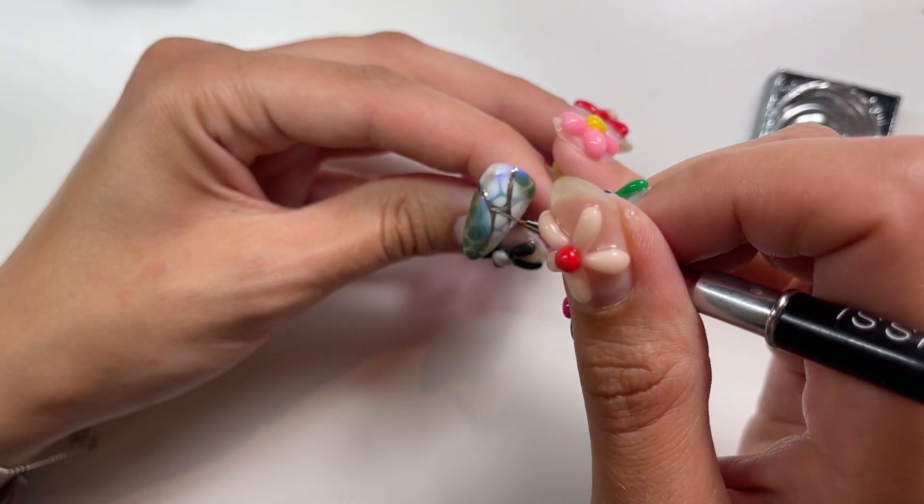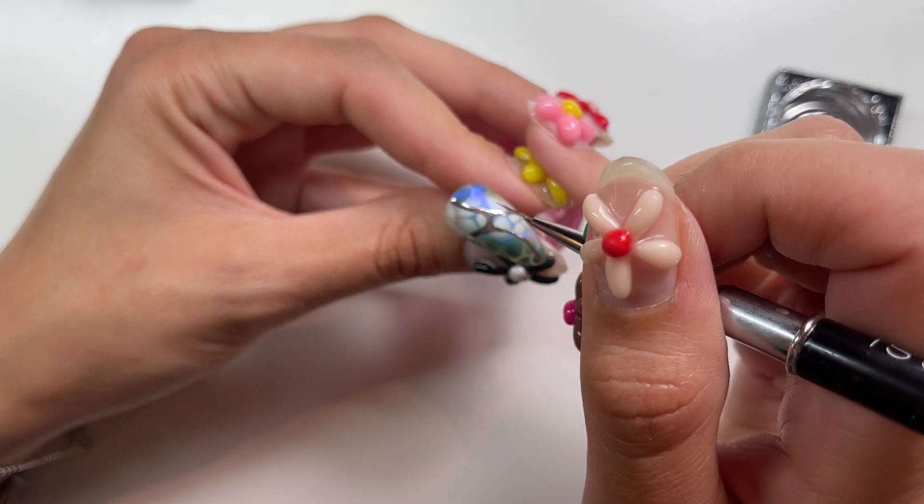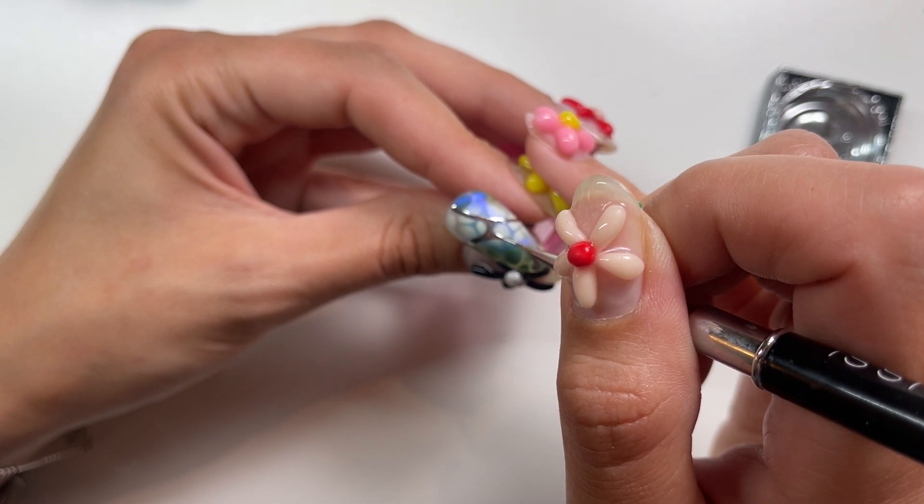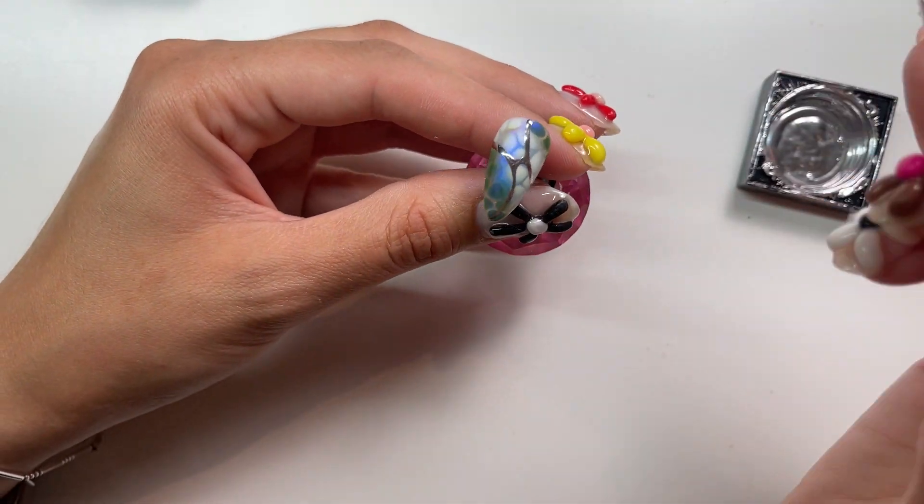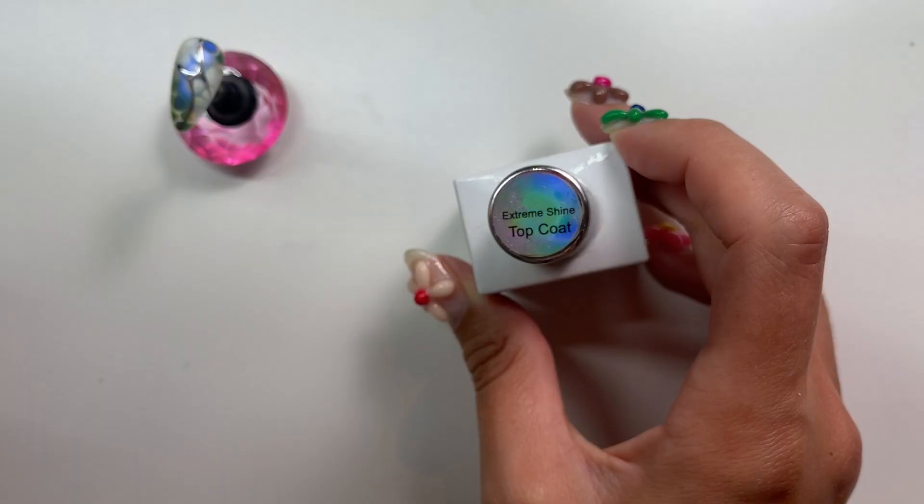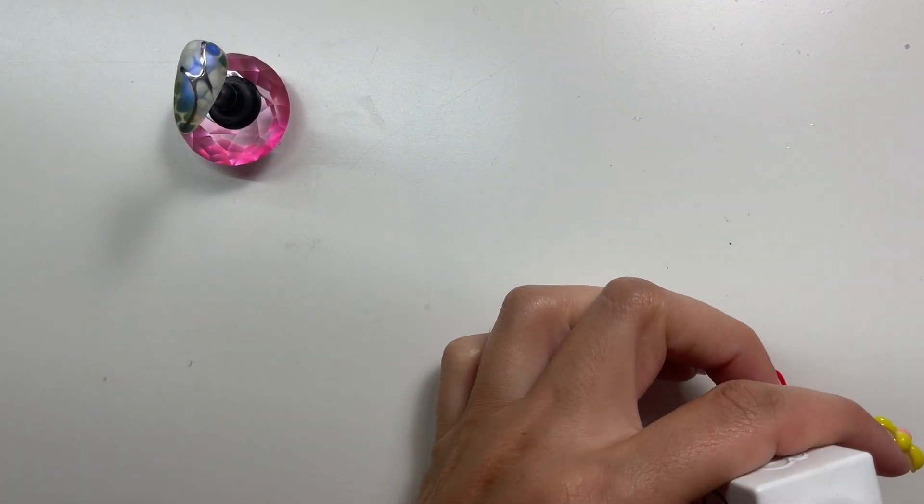So I'm going to apply that, and then with the Sissy chrome gel, you want to make sure you cure that for two to three minutes. So I usually work a couple fingers at a time so the fingers are really getting a good cure. It's just a little bit thicker, so it needs it.